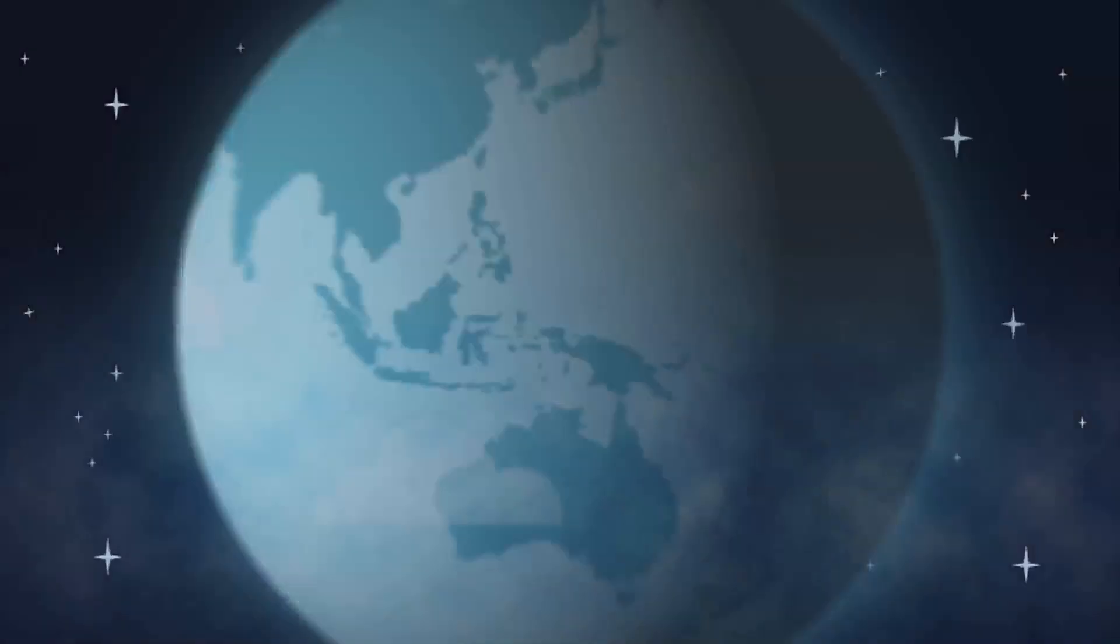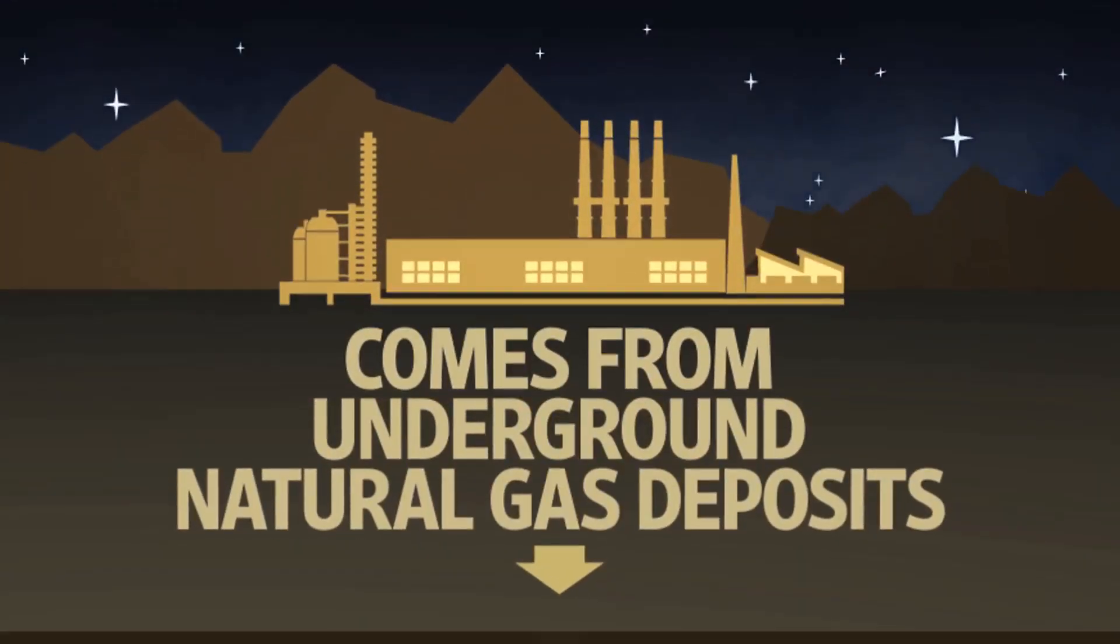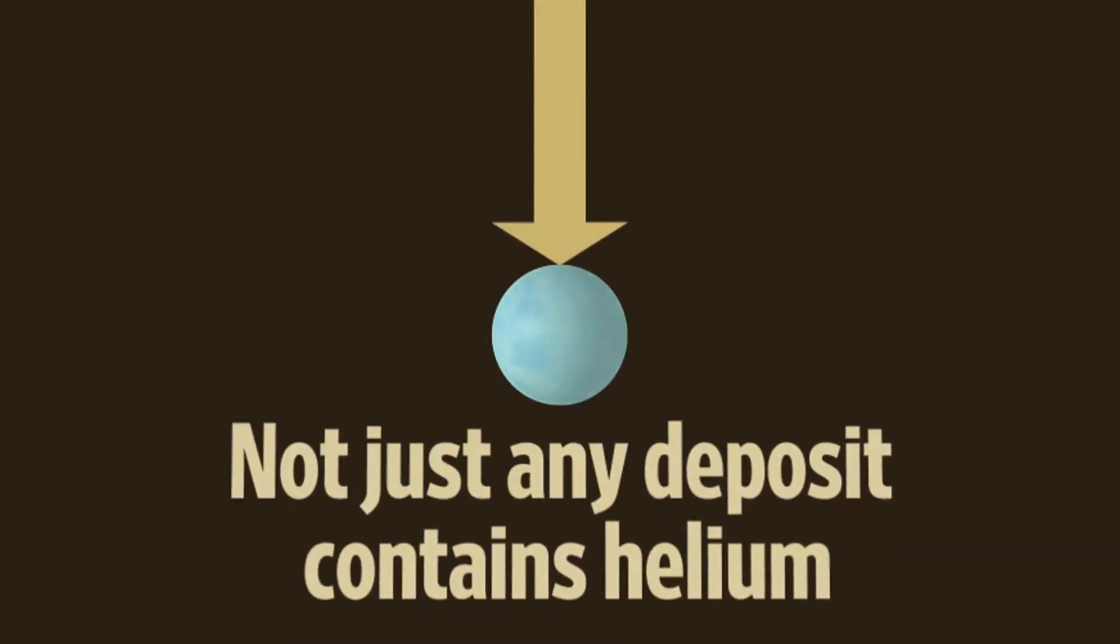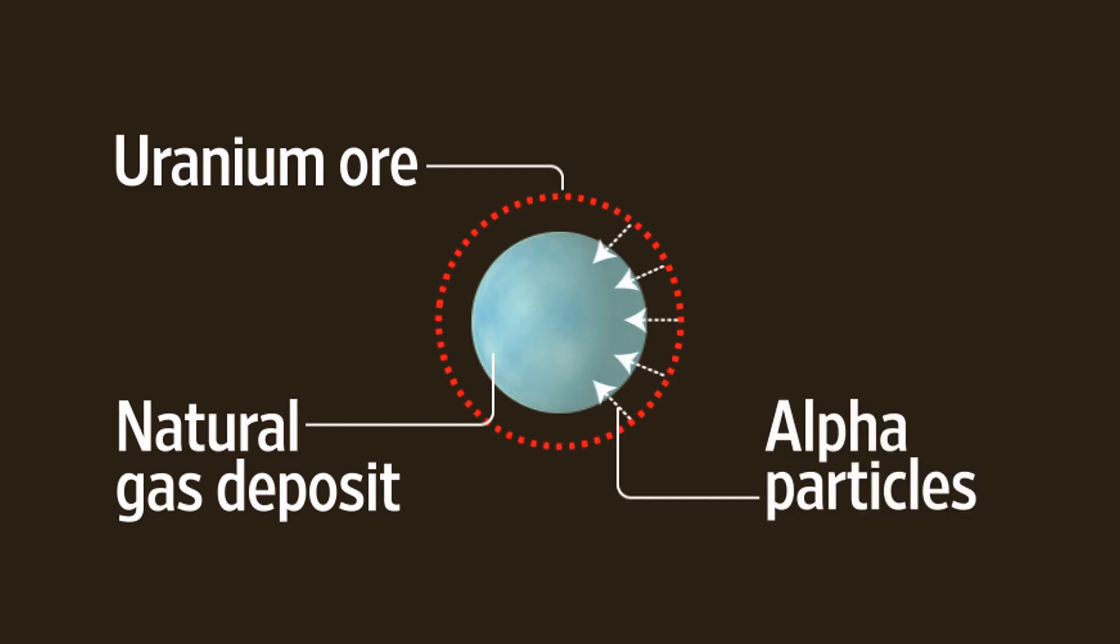So where does it come from? Almost all of the helium that we have on Earth comes from underground natural gas deposits, but not just any deposit contains helium. The natural gas has to be trapped in an area with a lot of naturally occurring uranium ore surrounding it. The ore gives off alpha particles that convert to helium. The natural gas in such areas contains up to 7% helium, which can be distilled out of the gas by liquefying it.